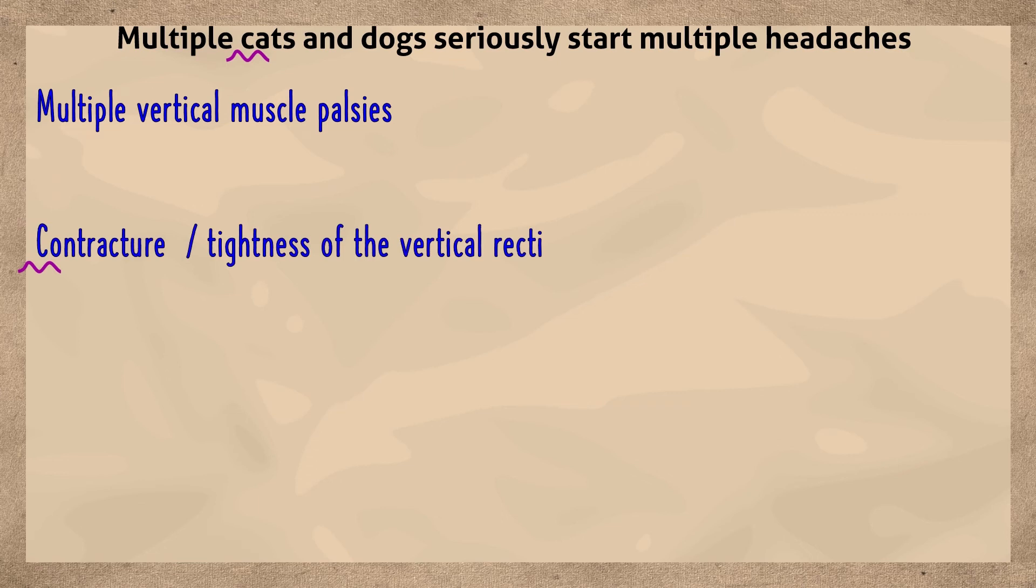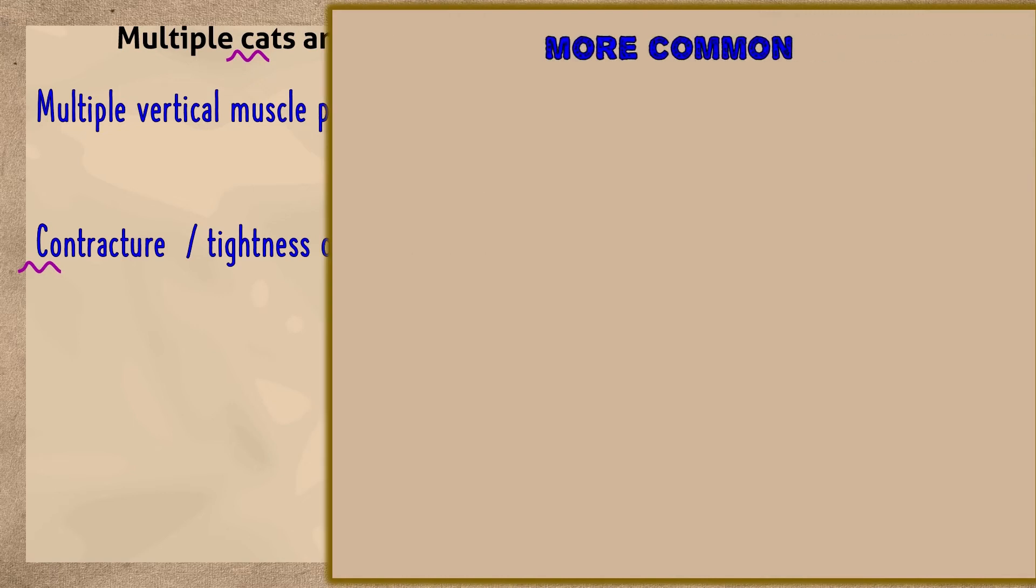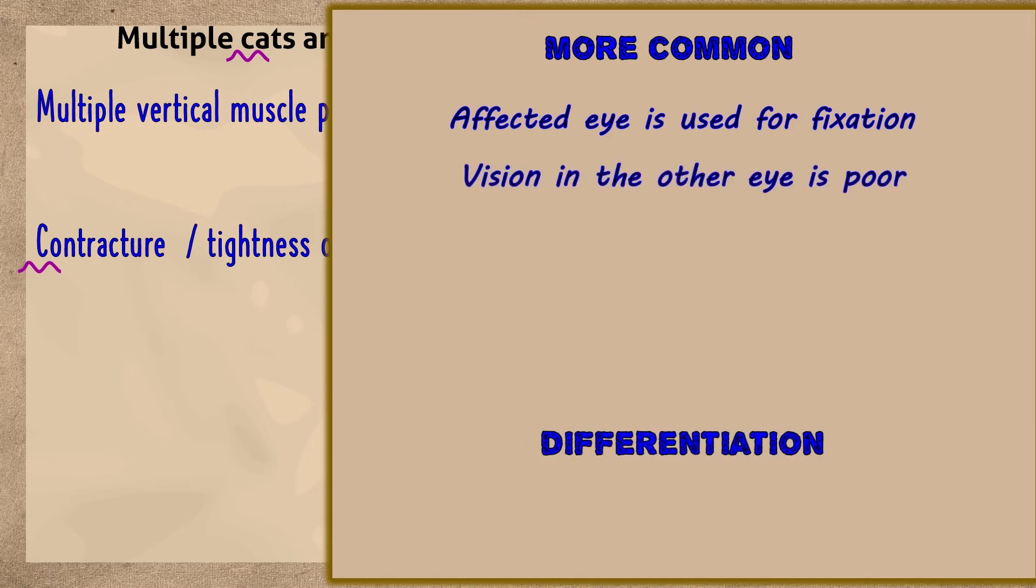The C stands for contractures or tightness of the vertical recti, commonly secondary contracture, blocked fracture of the orbital floor, thyroid ophthalmopathy, etc. These errors are more common if the affected eye is used for fixation, which is again more common if the vision in the other eye is poor. Fixation of the affected eye can be determined by looking for secondary deviation and the presence of restrictions by the force duction and active force generation tests.